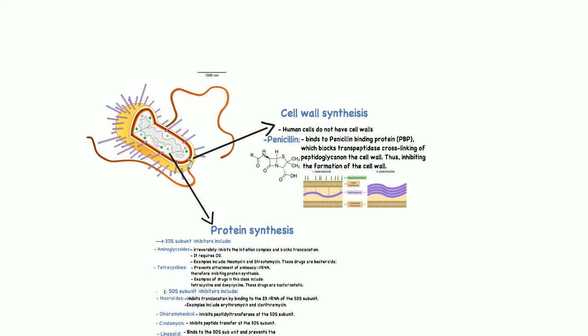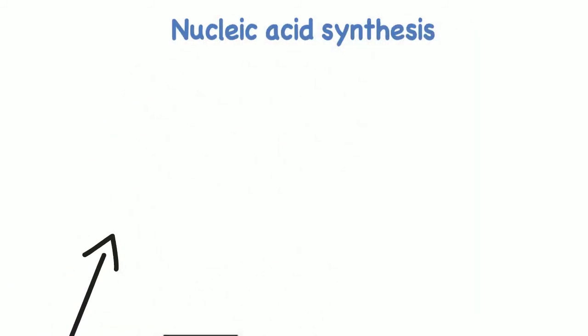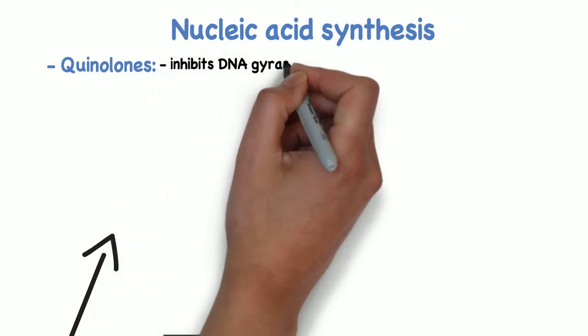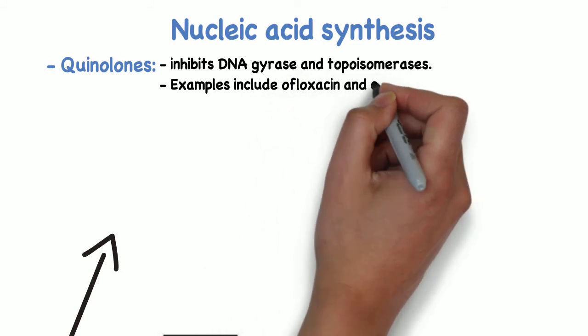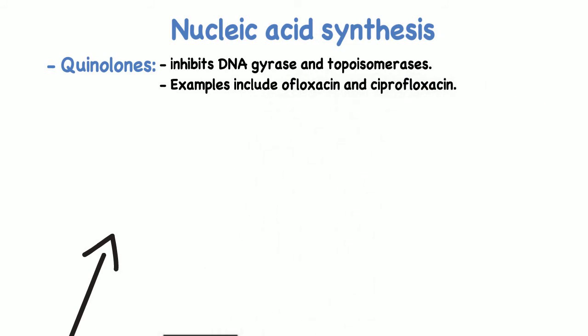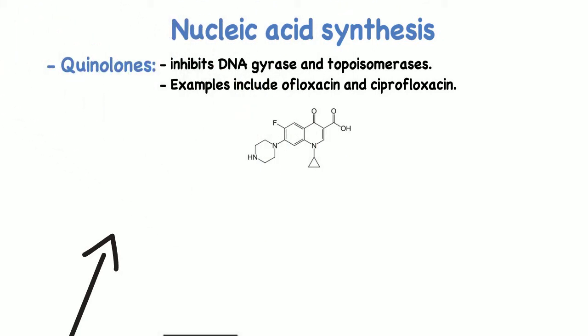Next, let's talk about nucleic acid synthesis. This includes the quinolones, which inhibit DNA gyrase and topoisomerases, therefore inhibiting DNA replication. Two examples include ofloxacin and ciprofloxacin.